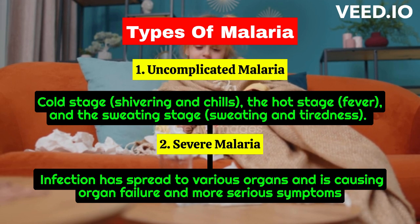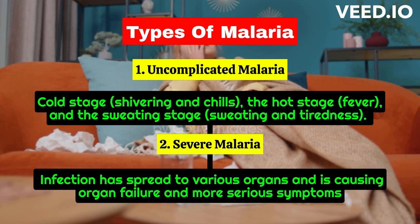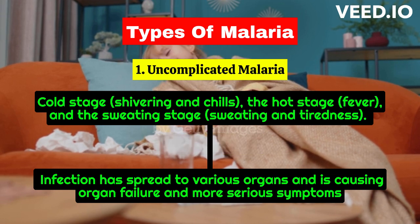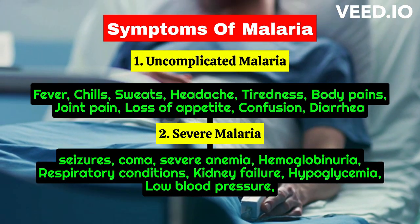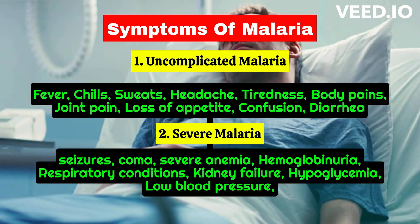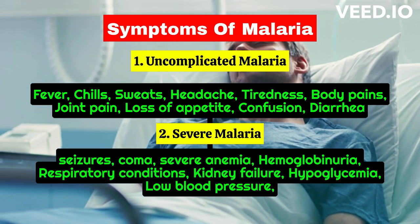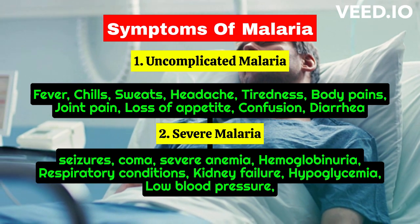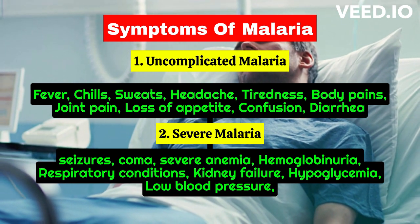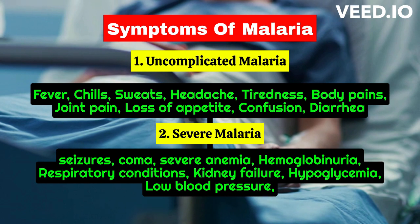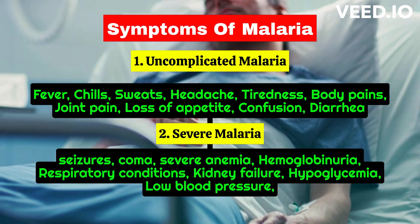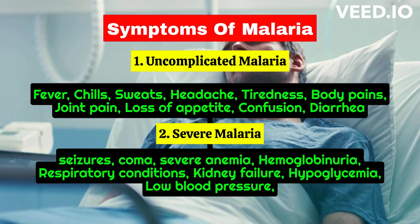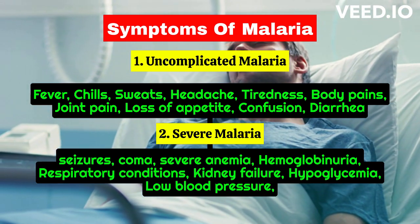Severe malaria is when the infection has spread to various organs, causing organ failure and more serious symptoms. Symptoms of uncomplicated malaria include fever, chills, sweats, headache, nausea and vomiting, tiredness, body pains, joint pain, loss of appetite, and confusion.